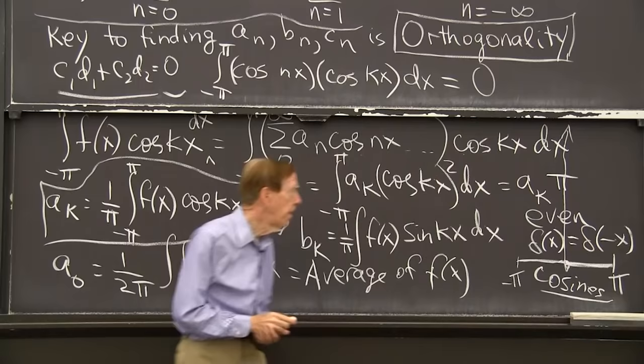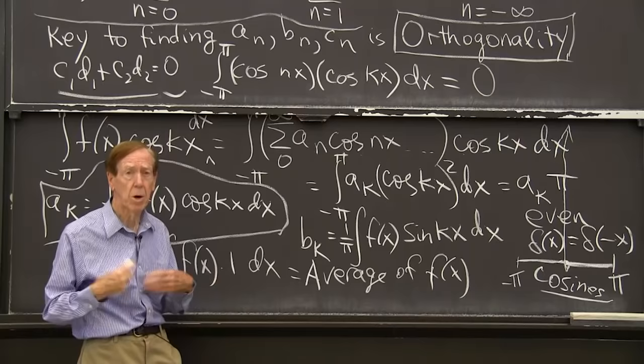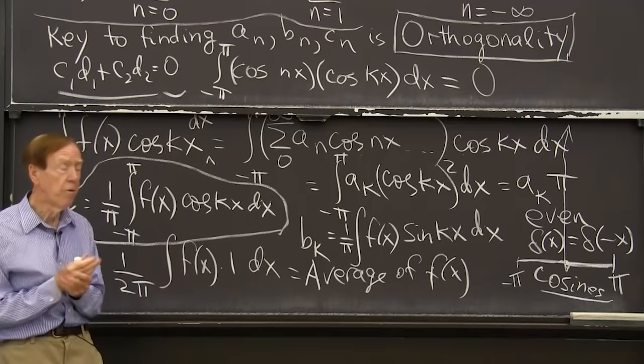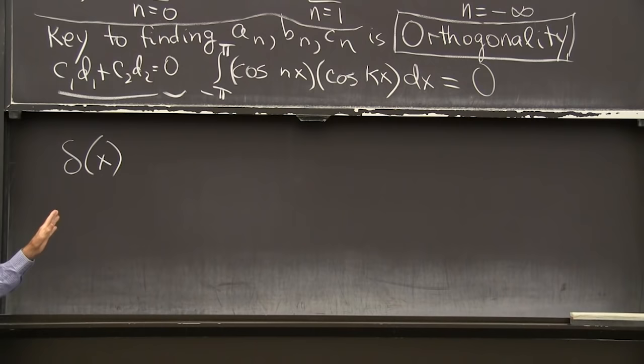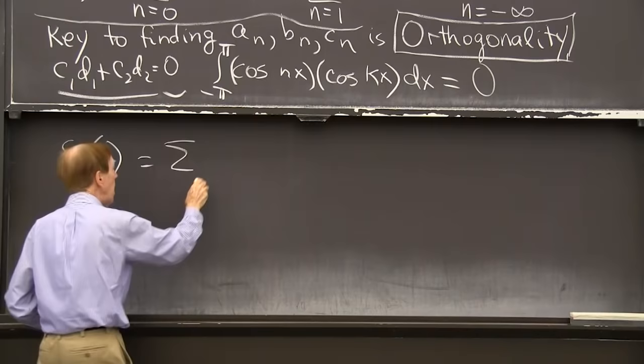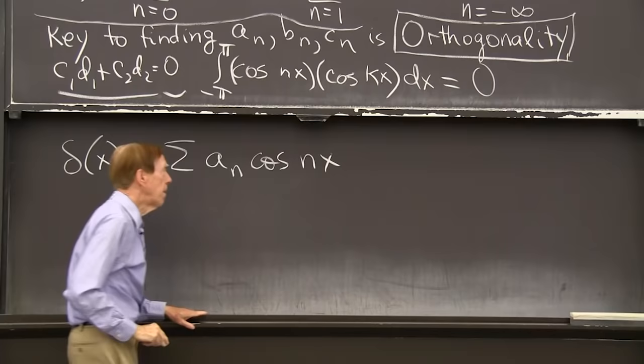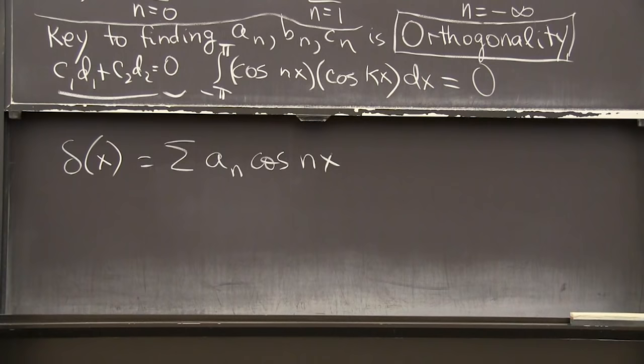And in that case, there will be no sines. Sine functions are odd. The integral from minus pi to pi of an odd function gives 0. My point is this is an even function. Delta of x is the same as delta of minus x. And only cosines. Good. The sine coefficients automatically are 0. I'm ready for the delta function. So I'm going to write delta of x, and we remember what the delta function is, is a combination of cosines.